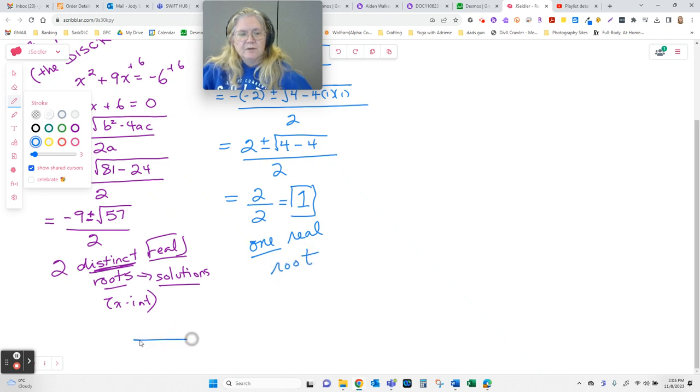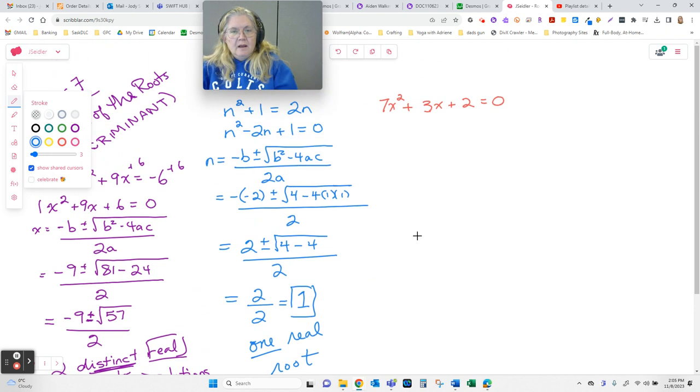So if you think about it, the one with 2, that's a parabola that hits and has two x-intercepts. One real root. I'm going to draw this one facing down. Only touches once. And on to this third one.